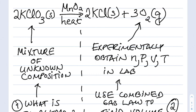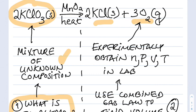As you remember, we are studying the reaction of potassium chlorate which decomposes to KCl and to oxygen. Now the KClO3 that we're using is not a pure reactant — it's actually a mixture of unknown composition. So what we're going to try to find out is, first of all, what is the percent composition of that mixture?